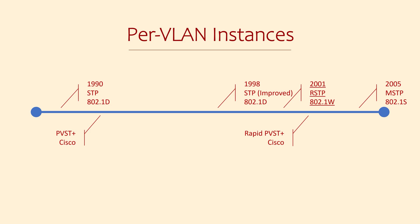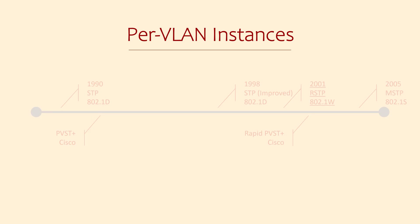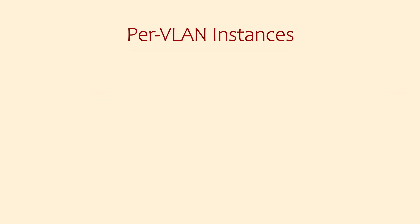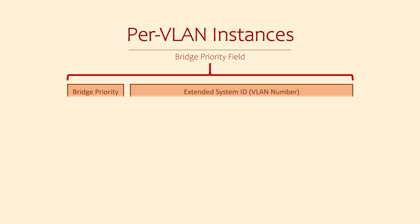Another version of spanning tree called MSTP is the vendor-neutral option that is VLAN-aware. So what does it mean when we say VLAN-aware, or per-VLAN?